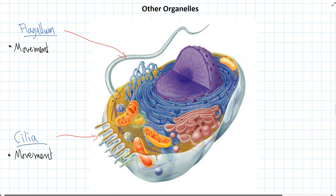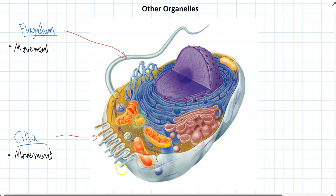Not many human cells have cilia, although our windpipe has cilia — not to move the cell, but to move dust and things out of our lungs. So they can control movement of things outside the cell and push things along past the cell.